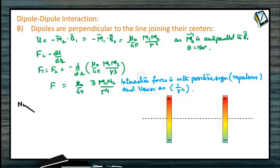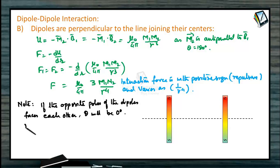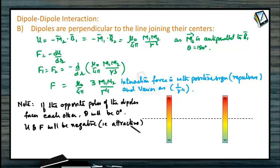In this case also, if the opposite poles of the dipoles face each other, theta = 0 degrees. Therefore U and F will be negative, meaning attraction, and varies as 1 by R to the power 4.